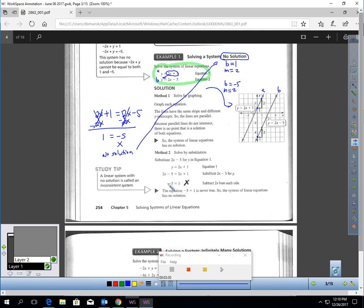No solution. When you have systems with no solution, another way of saying that is we have an inconsistent system. That's a no solution problem. It's an inconsistent system.